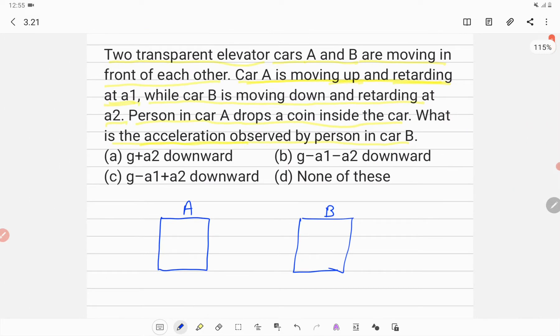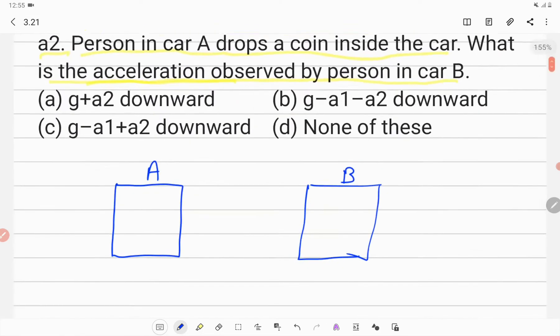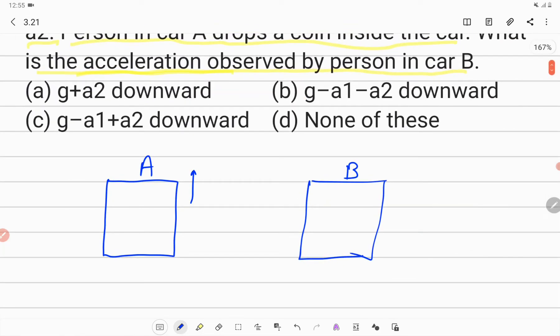It is given in the question that car A is moving up and retarding at acceleration A1. So its speed is upward but it is retarding, so its acceleration should be downward directed.